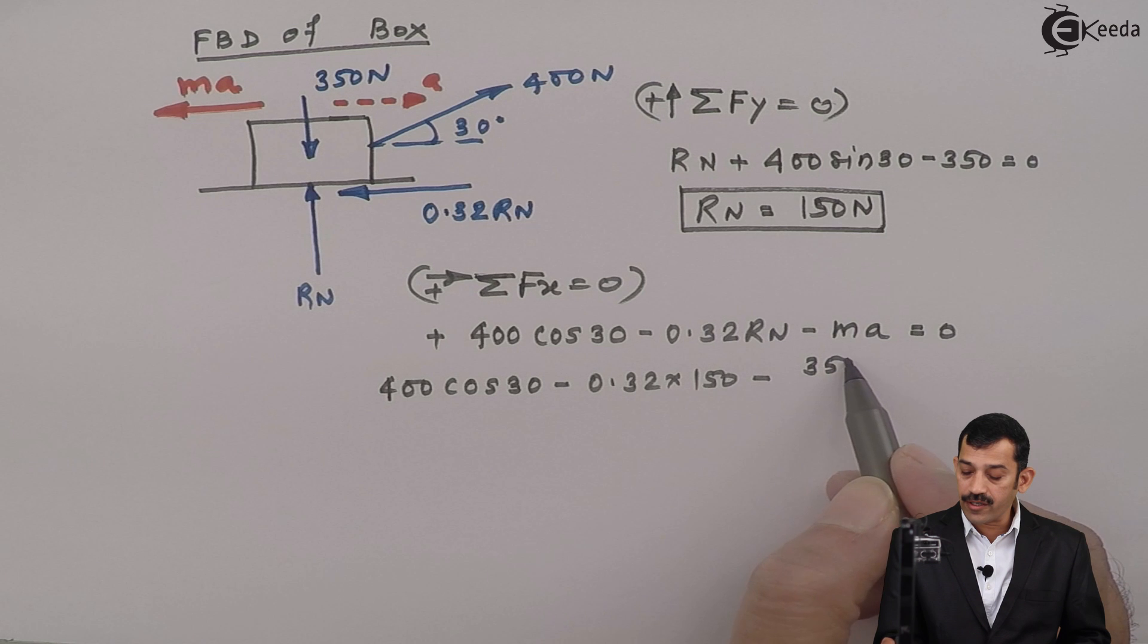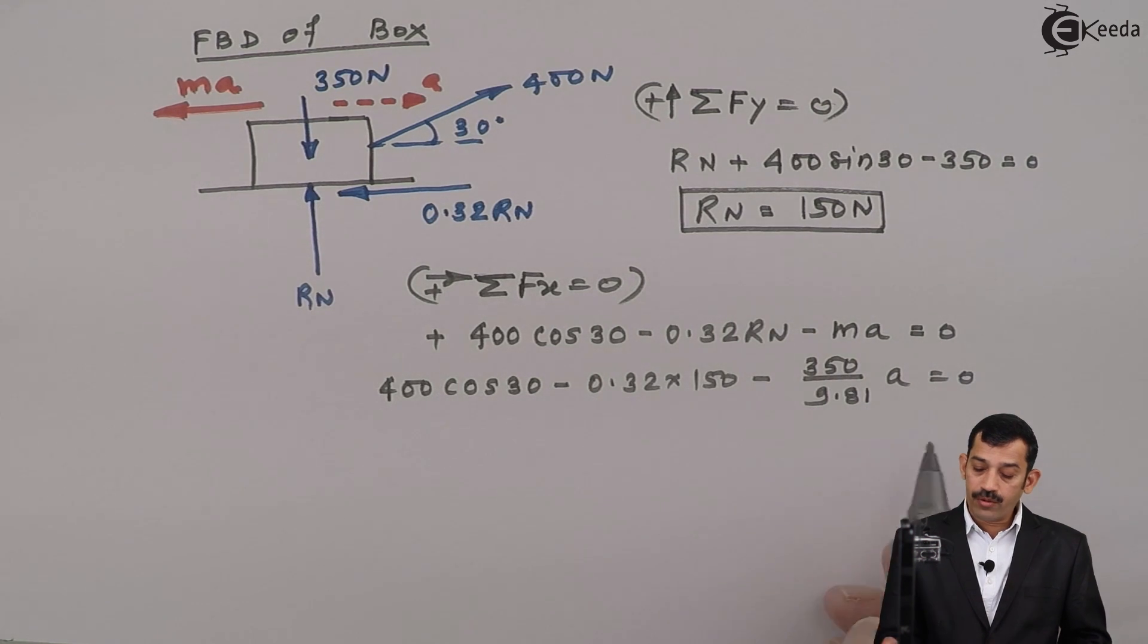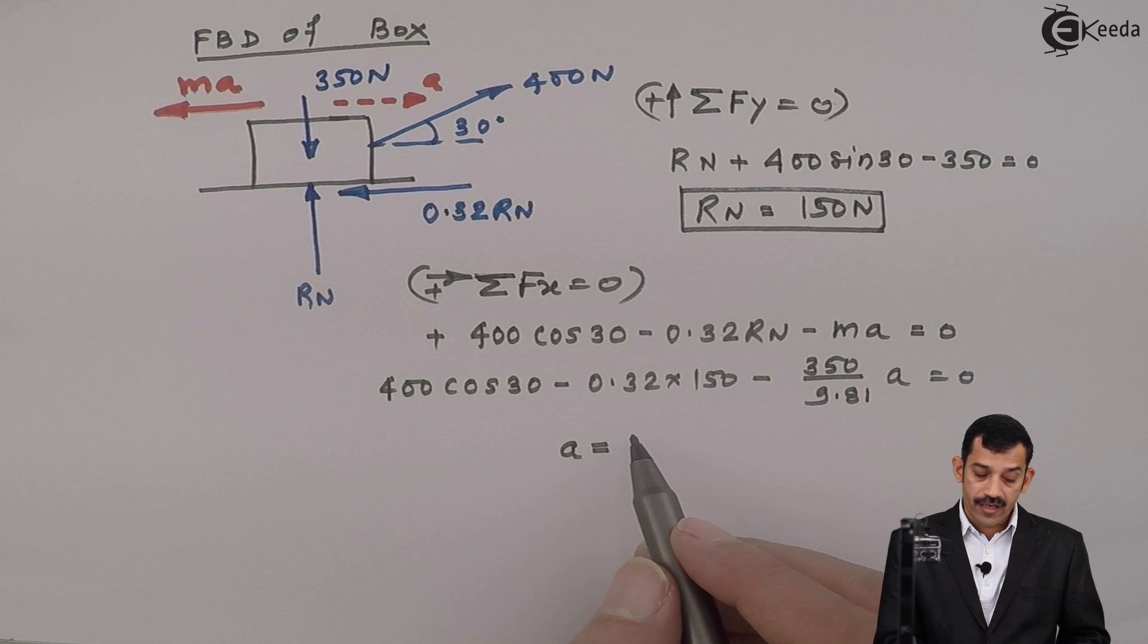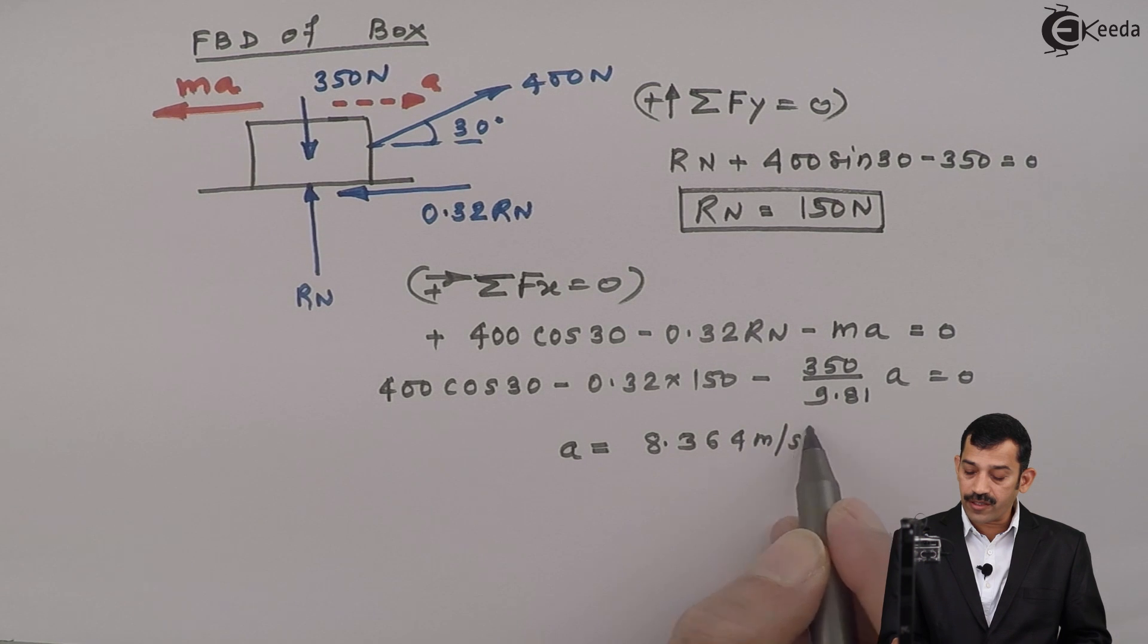Therefore, mass if you want to find out, I will take this weight divided by G means 9.81 into acceleration. Unknown term is only acceleration. Using calculator, if you will calculate, A comes out to be 8.364 meters per second square.